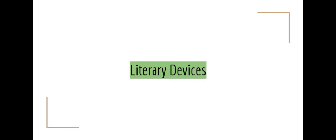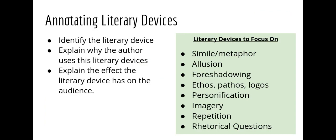In green, you are going to highlight literary devices. There are some important ones you need to look out for. When you annotate a literary device, you need to identify the literary device in your comment, explain why the author uses that literary device, and the effect the literary device has on the audience. Some top literary devices to focus on: simile and metaphor, allusion, foreshadowing, ethos, pathos, logos, personification, and the rest of the list. We're going to go over each of these.